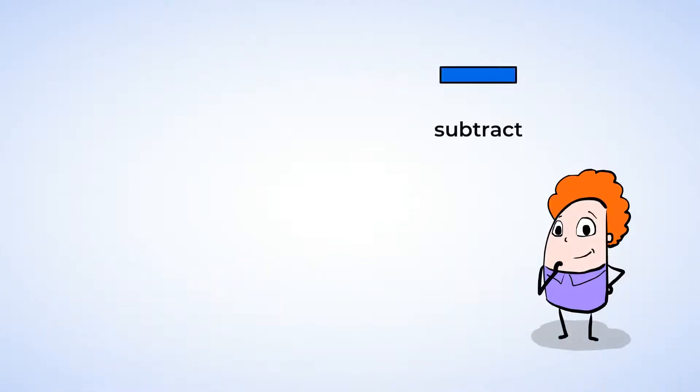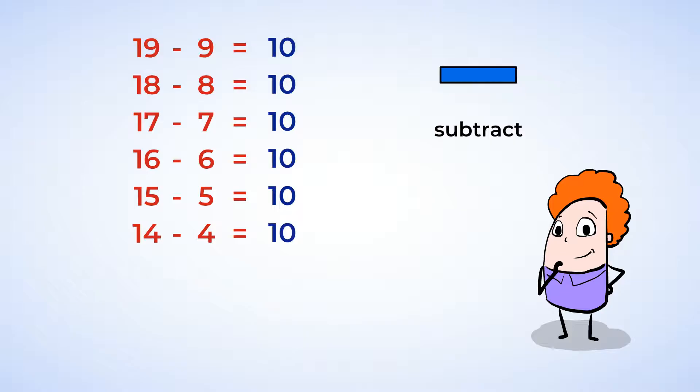Want to try it with subtraction now? Sometimes 10 likes to hide with a minus sign. Here are the ways you can find it: 19 minus 9, 18 minus 8, 17 minus 7, 16 minus 6, 15 minus 5, 14 minus 4, 13 minus 3, 12 minus 2, and 11 minus 1. Now that you know how 10 likes to hide, take a look at this subtraction problem.